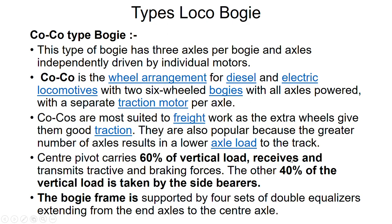Now the CoCo type bogie. This type of bogie has three axles per bogie and axles independently driven by individual motors. CoCo is the wheel arrangement for diesel and electric locomotives with two six-wheeled bogies, with all axles powered by a separate traction motor per axle. CoCo bogies are most suited to freight work as the extra wheels give good traction. They are also popular because the greater number of axles results in a lower axle load. The center pivot carries 60% of the vertical load, receives and transmits the tractive and braking forces. The other 40% of the vertical load is taken by the side bearers. The bogie frame is supported by four sets of double equalizers extending from the end axles to the center axles.